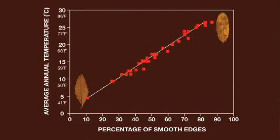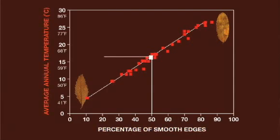Each dot is positioned on the horizontal axis by what percent of its species had smooth edges, and on the vertical axis by the temperature that forest was growing under.